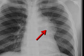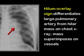What is the name given to this sign? This is the hilum overlay sign, which can help to differentiate a large pulmonary artery from a hilar mass on a chest x-ray. The mass, as in this case, will superimpose on the underlying pulmonary vessels and indicate that the mass actually is not a large pulmonary artery.